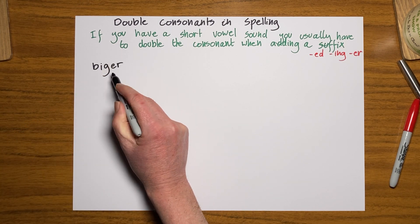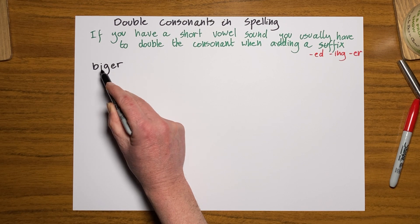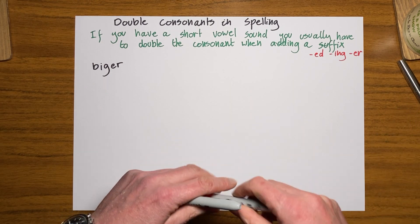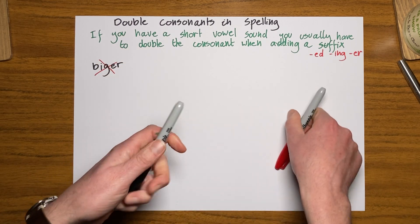Once I put this vowel here and I've got the split vowel digraph, it changes that from an I to an I. So I haven't got a bigger house. Let's start that again. Let's make sure we get it right.